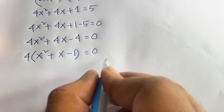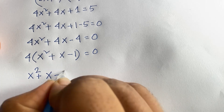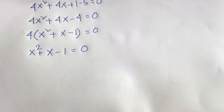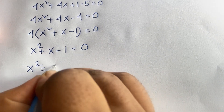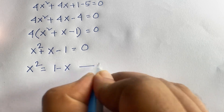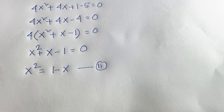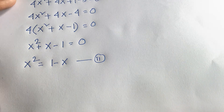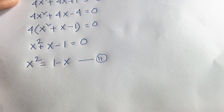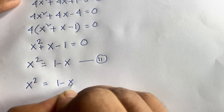Dividing both sides by 4 we find the quadratic equation: x² + x minus 1 is equal to 0. From this I can say x² is equal to 1 minus x. So our second equation is x² = 1 minus x, and our first equation remains x equals square root 5 minus 1 over 2.